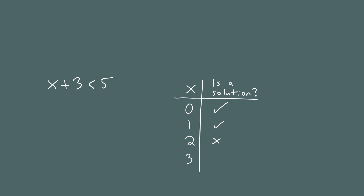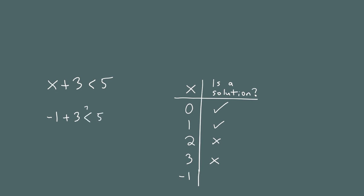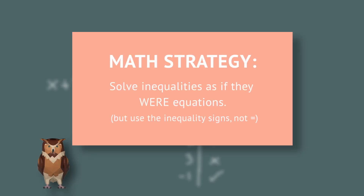If we try 3, we get 3 plus 3 is less than 5, which is false because 6 is not less than 5, so 3 is not a solution. We could also test negative numbers — for example, negative 1: plugging in gives negative 1 plus 3 is less than 5, which simplifies to 2 is less than 5, which is true. So negative 1 is a solution. We could keep doing this forever and never run out of solutions, so guessing and trying numbers is not what you want to do.